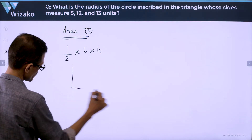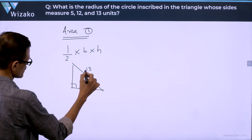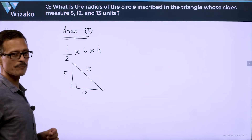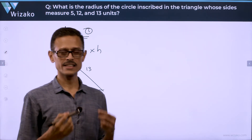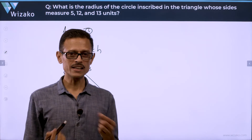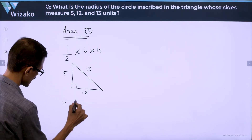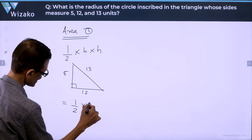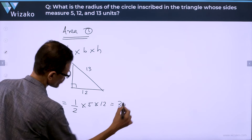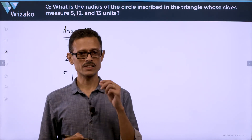It's a right triangle, so let's draw it. The hypotenuse is 13; the other two sides — the perpendicular sides — are 5 and 12. The beauty of a right triangle is that the perpendicular sides become the base and height. So the area equals half times 5 times 12, which works out to 30 square units.